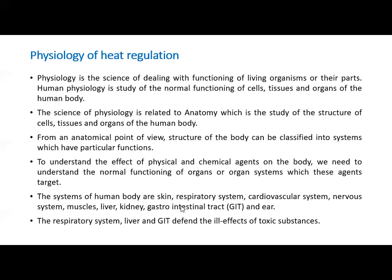The systems of the human body include skin, respiratory systems, cardiovascular systems, nervous systems, muscles, liver, kidney, GIT (gastrointestinal tract), and ER. These are the major organs. The respiratory systems, liver, and GIT defend against the ill effects of toxic substances. When we are working in environments where toxic substances are present, the respiratory system, liver, and GIT defend against the adverse or negative effects of those toxic substances.